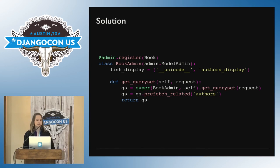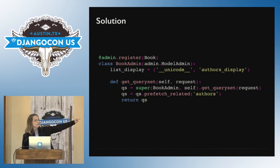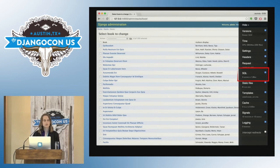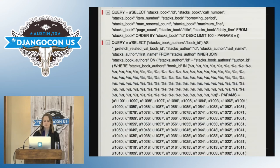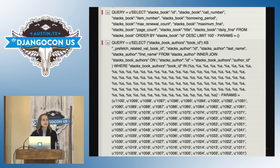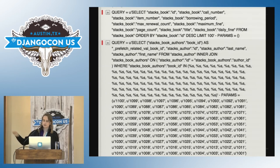Instead, what we do is another custom queryset to save the day. We take our book admin, get the queryset Django is using, call prefetch_related('authors'), and now we're down to five queries. Django computes in advance all of the primary keys it needs for prefetch_related, and you're off to the races. This is useful — you can put more information in your admin without sacrificing performance, and you can keep the admin around for longer, which means you can develop features and get your system up and running faster.